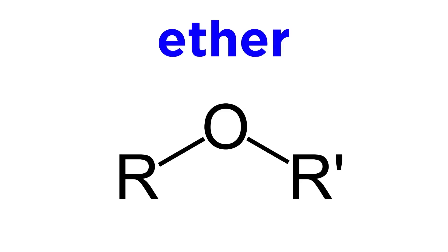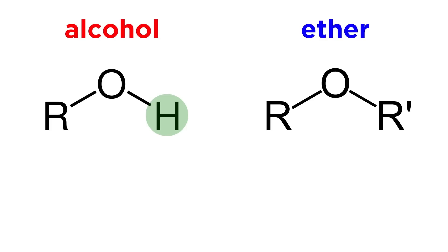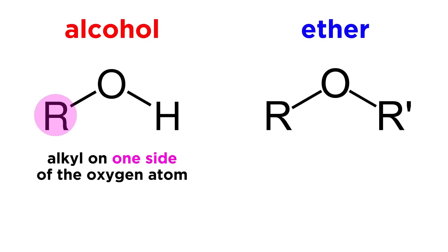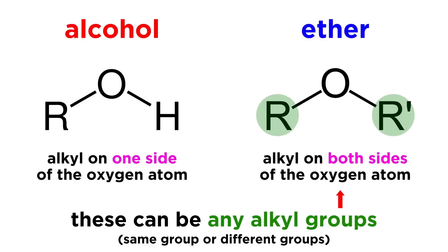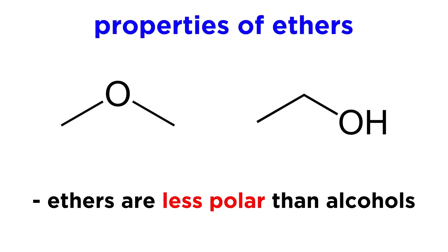Now let's look at ethers. Whereas an alcohol is ROH, an ether is ROR. So instead of alkyl on just one side of the oxygen atom, we have alkyl on both sides. We have replaced the hydrogen in an alcohol with more alkyl. These alkyl groups can be absolutely anything — they can be the same group or different groups. In terms of the properties of ethers, we will have to bear in mind that they are less polar than alcohols,